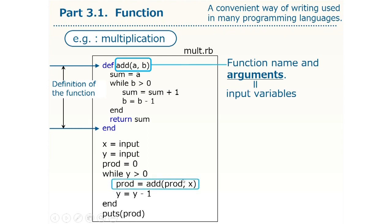For example, here, if we write add prod comma x, like this, the value of prod and the value of x are stored in a and b, respectively, and the computation stated here is executed.